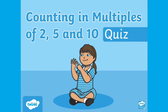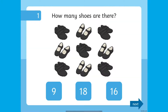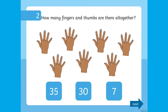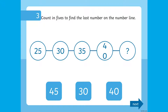You will also find this counting in multiples 2, 5 and 10 quiz. This is a visual quiz where children need to use the pictures to help them find the answers, like this: how many fingers and thumbs are there altogether?